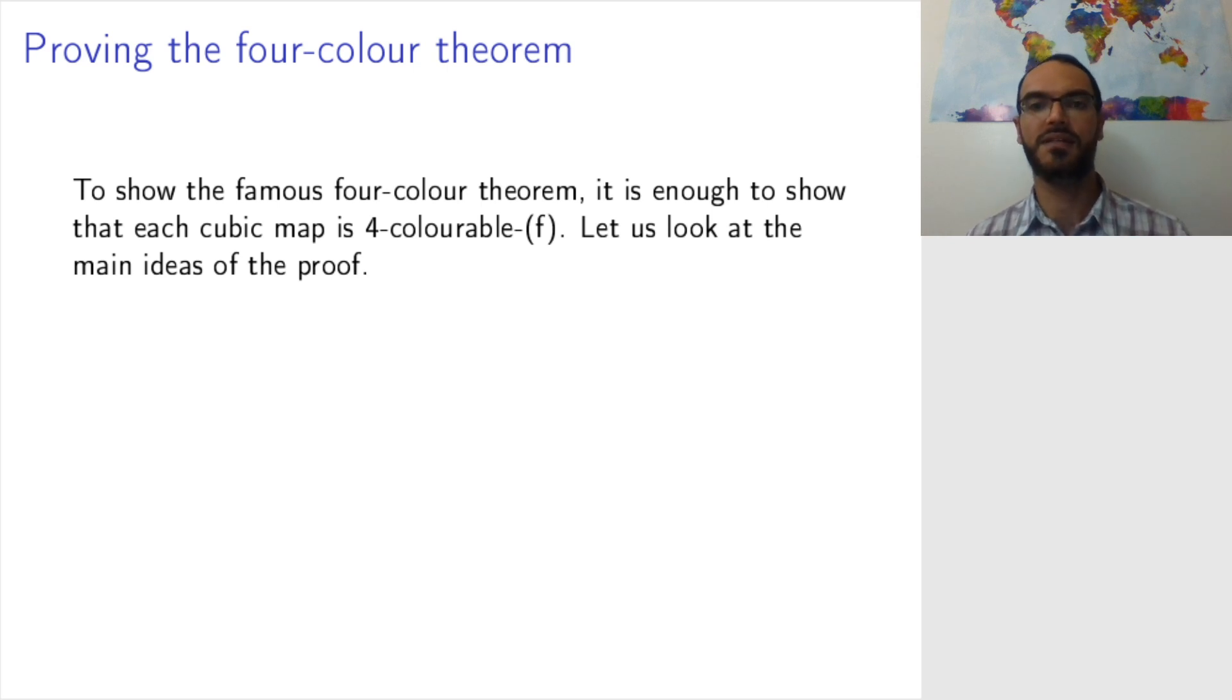So let's look at the main ideas of the proof. How do you prove that such a map is four-face colorable? I will just give the ideas and some of this will be quite abstract and I will not be precise. The idea is just to highlight this theorem because it's one of the major achievements in graph theory. You are not required to be able to reproduce this proof or to know the steps precisely.